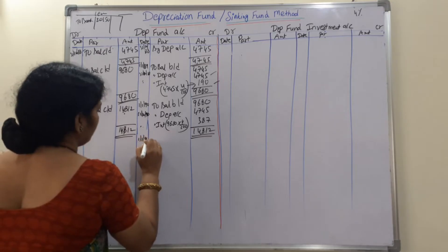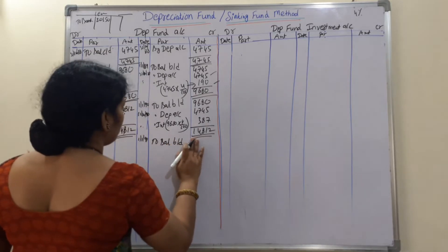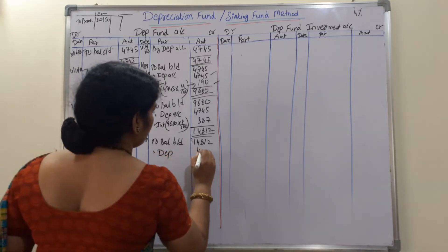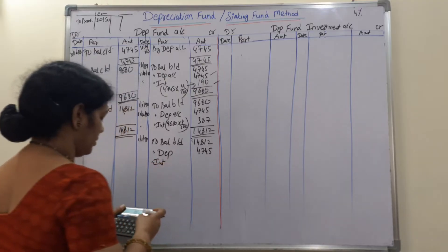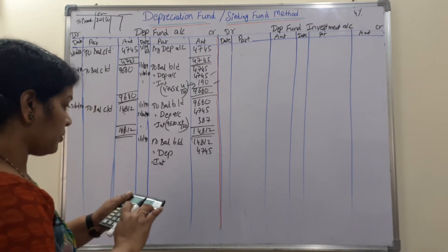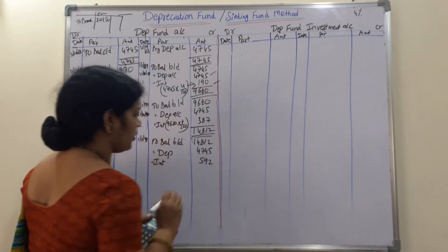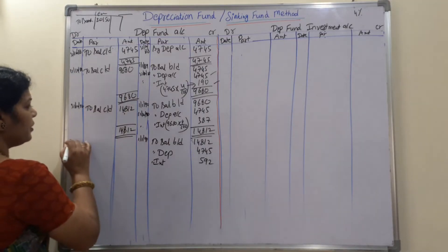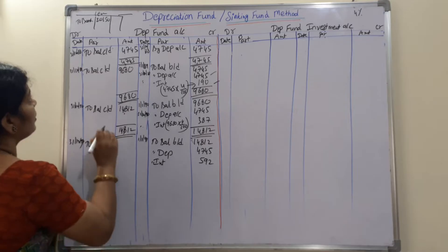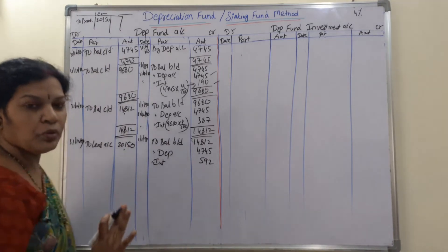On 1/1/91 balance brought down 14,812. Again providing depreciation 4,745, and interest: 14,812 × 4% = 592. Last year on 31/12/91, to lease account the amount is 20,150 - the lease amount already written. So we open the entry and then come down to the depreciation fund investment account.